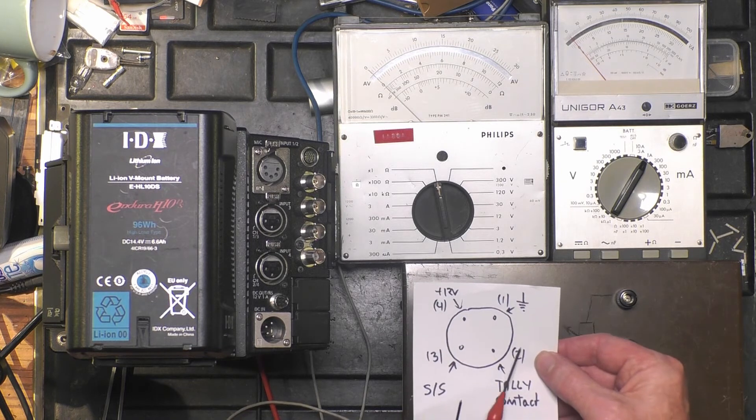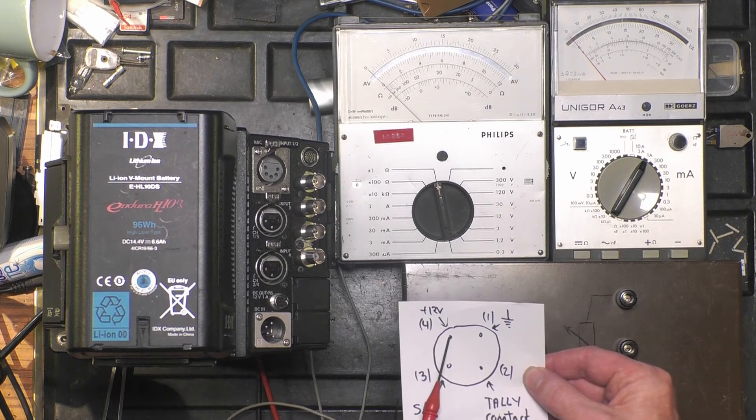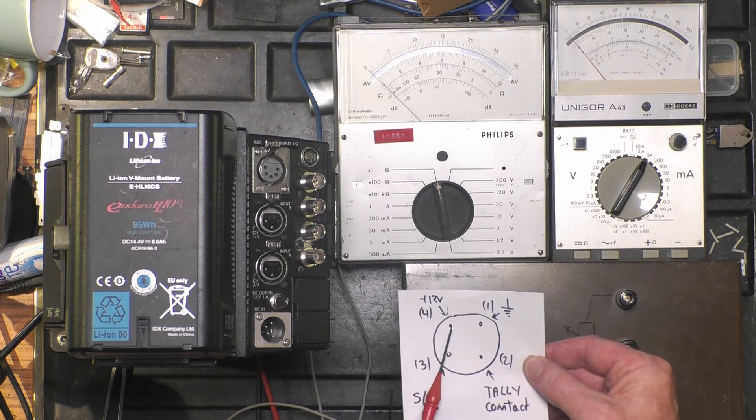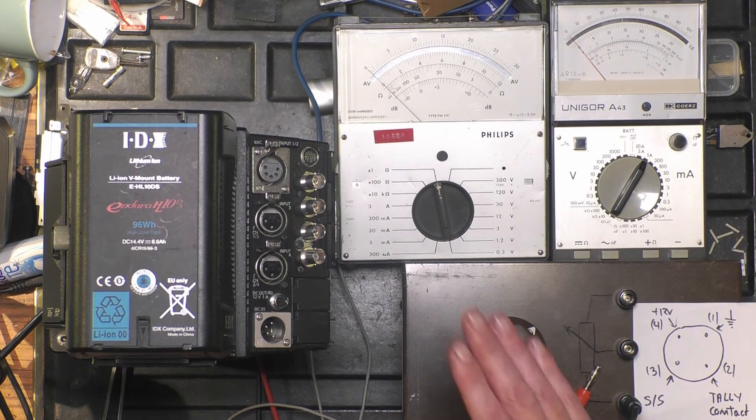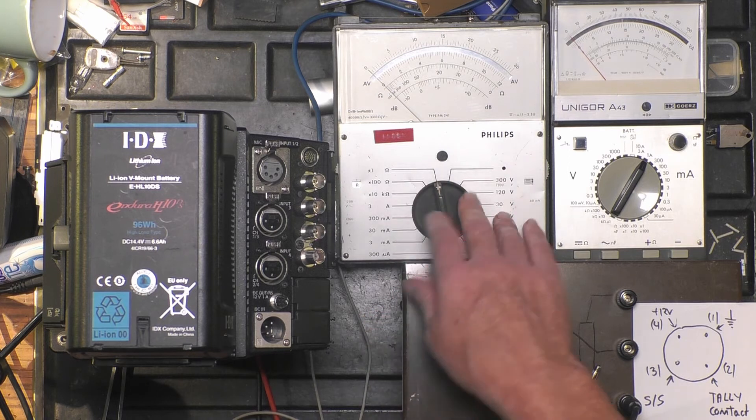Okay, then we know we count clockwise and number. First thing we want to do is check the 12 volt output. To check the 12 volt output, we need a voltmeter.